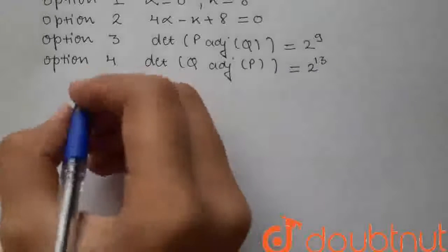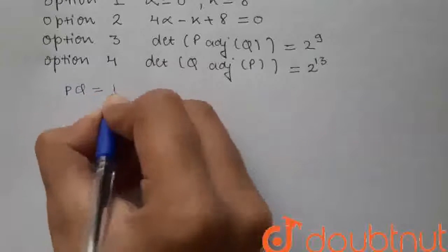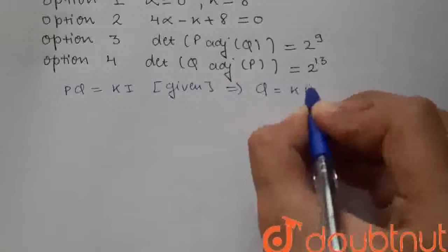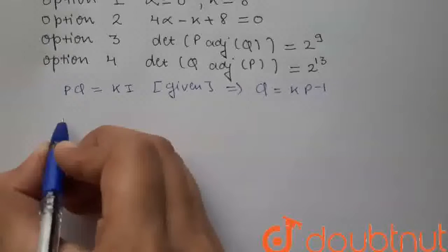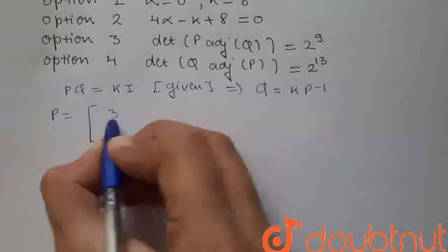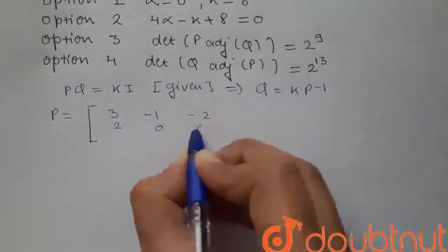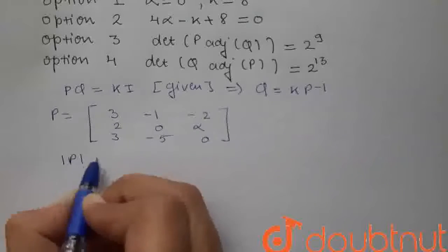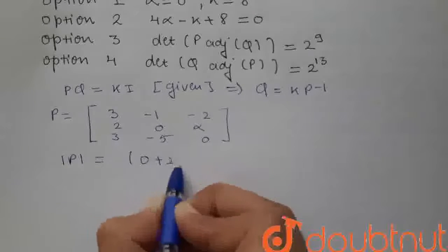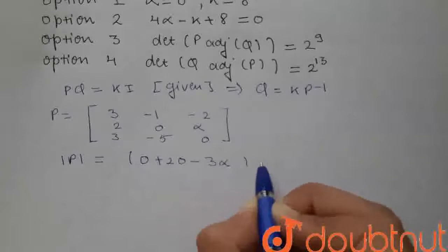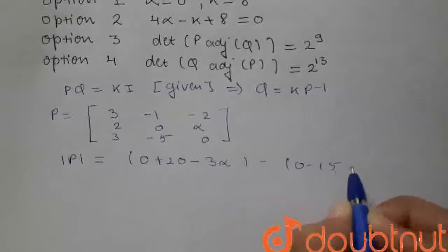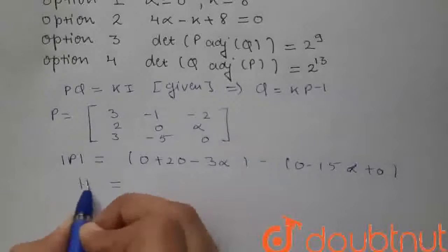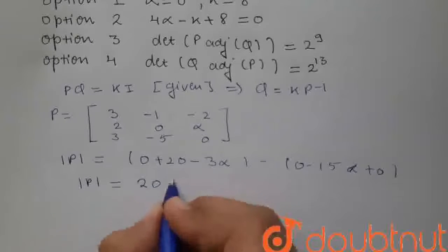We are given that PQ = KI. From here we can say that Q = K·P⁻¹. Now we will find the determinant of P. P is given as [3, -1, -2; 2, 0, alpha; 3, -5, 0]. So the determinant of P will be 0 + 20 - 3alpha - 0 - 15alpha + 0 — wait, here we will get determinant of P = 20 + 12alpha.